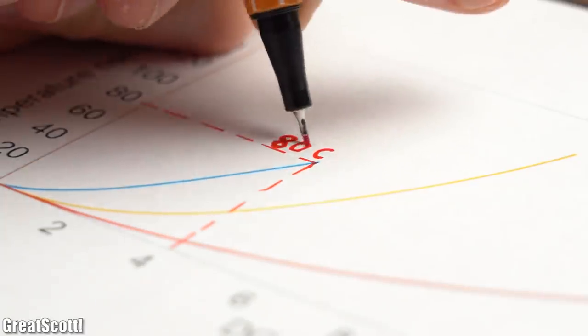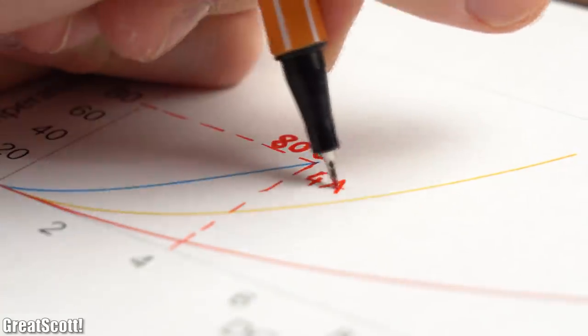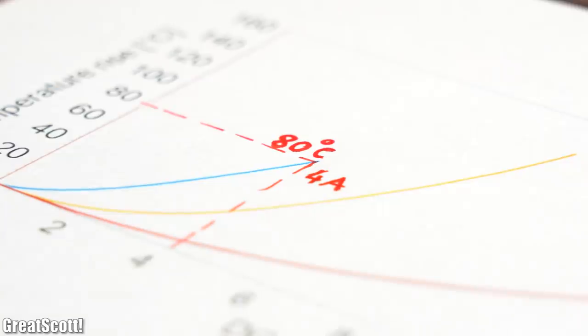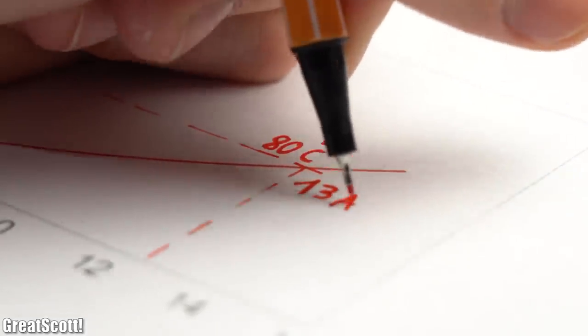But more important in this case is that the temperature of the small coil increases up to 80 degrees celsius at a current flow of 4 amps, while the bigger coil would need 13 amps to reach the same temperature.